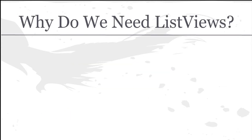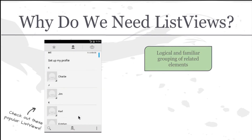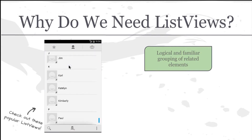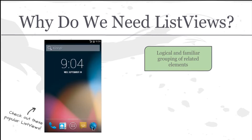So let's kick things off by understanding why we need List Views. It's fairly intuitive — List Views are a logical and familiar grouping of related elements. Users are used to seeing things in lists: shopping lists, lists of favorite things to do. And it's also logical — if you want to group things together, it just makes sense to do it in a list.